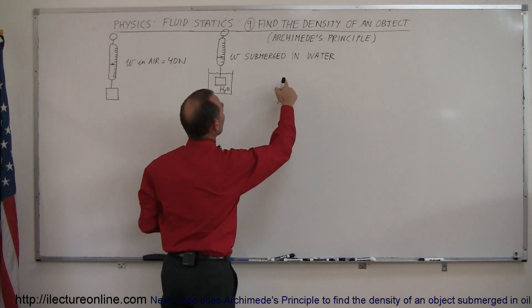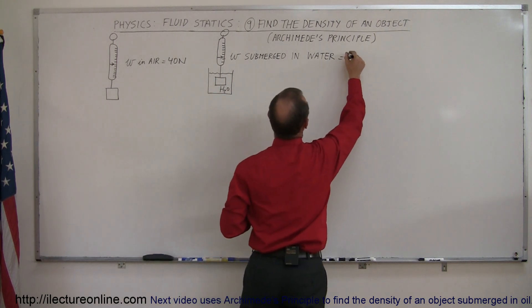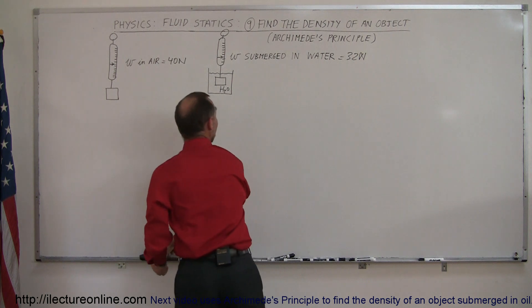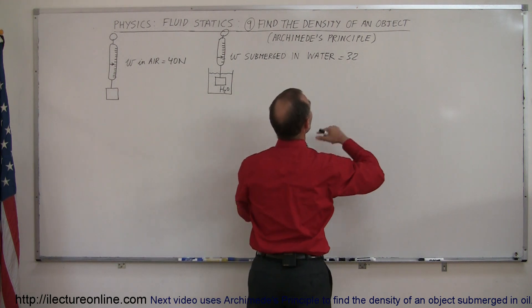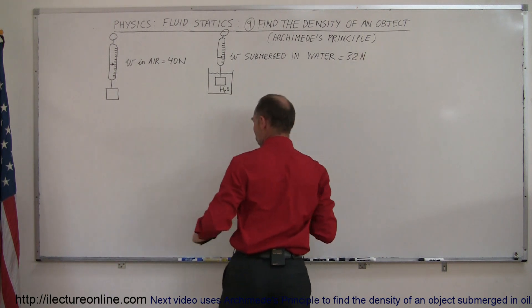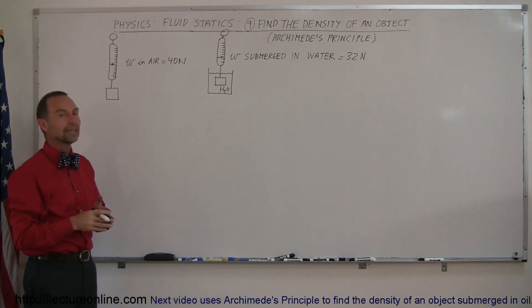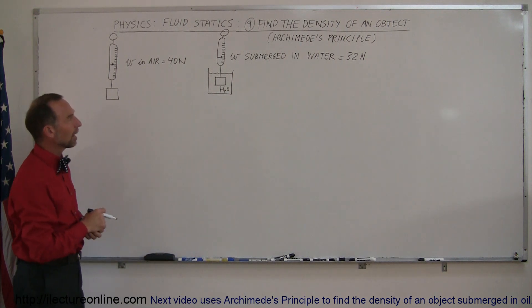And then the weight is only, let's see, I didn't write it down, let's say it's 32 Newtons. That's a terrible looking N, so let's write that again. 32 Newtons is the weight when it's submerged in water, and of course sometimes that's also called the apparent weight of the object.